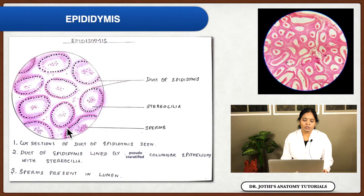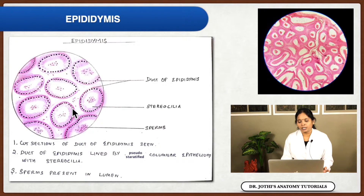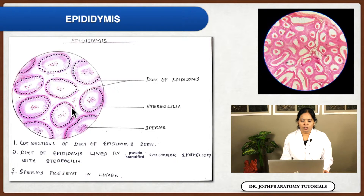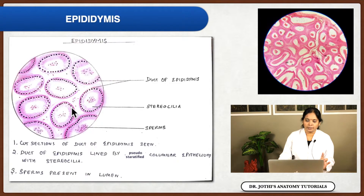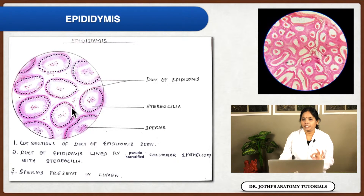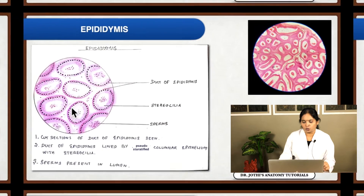In the pseudostratified epithelium, there are two types of cells: principal cells, which are simple columnar, and basal cells, which are dwarf cells. The important thing to know about the epididymis: the epithelium is pseudostratified columnar epithelium with stereocilia, and in the lumen you will see clumps of spermatozoa.